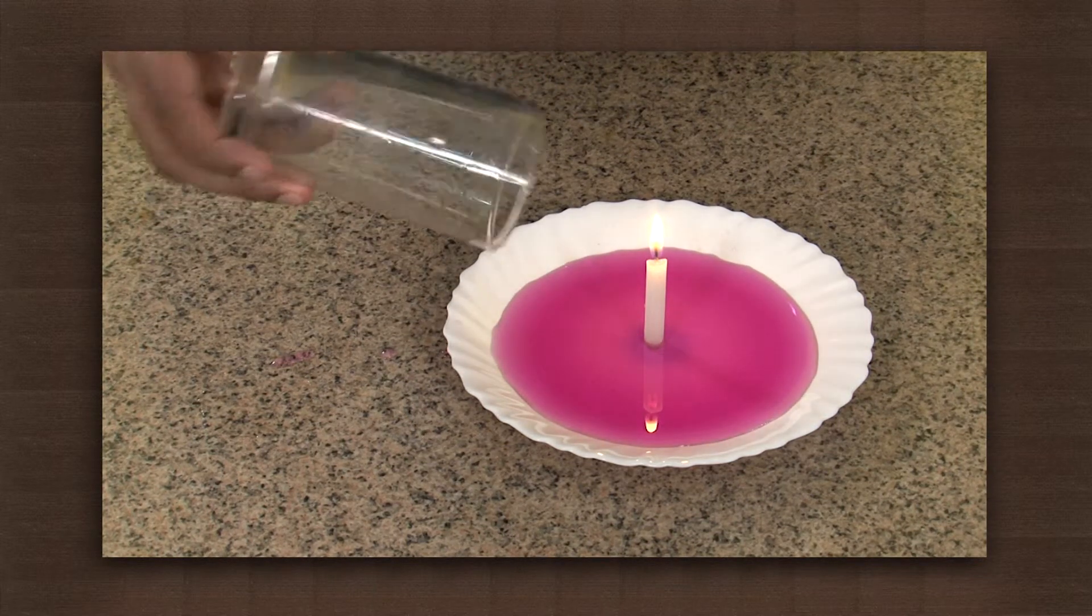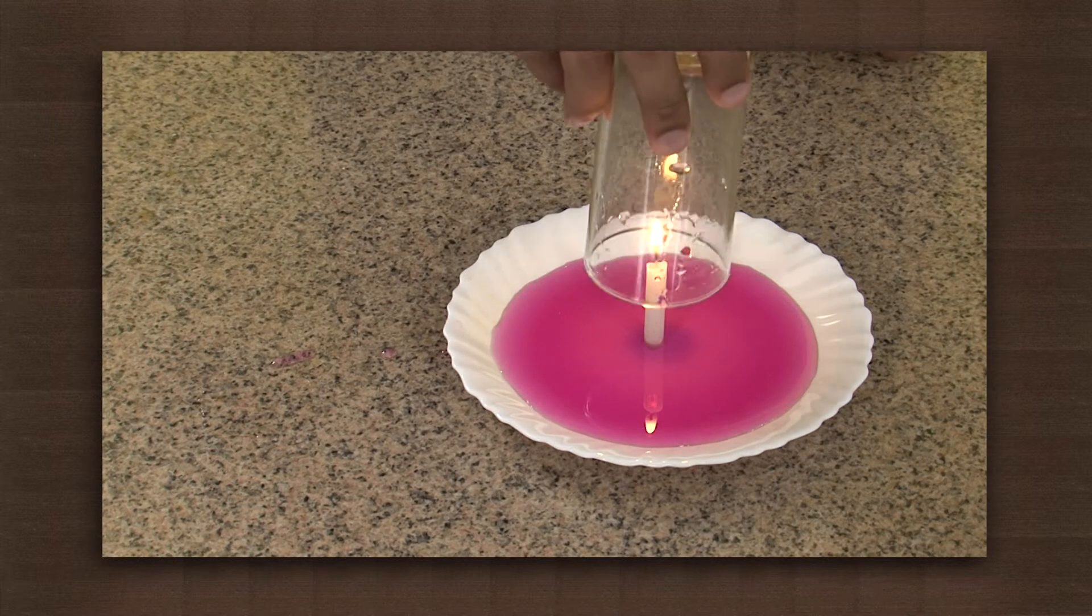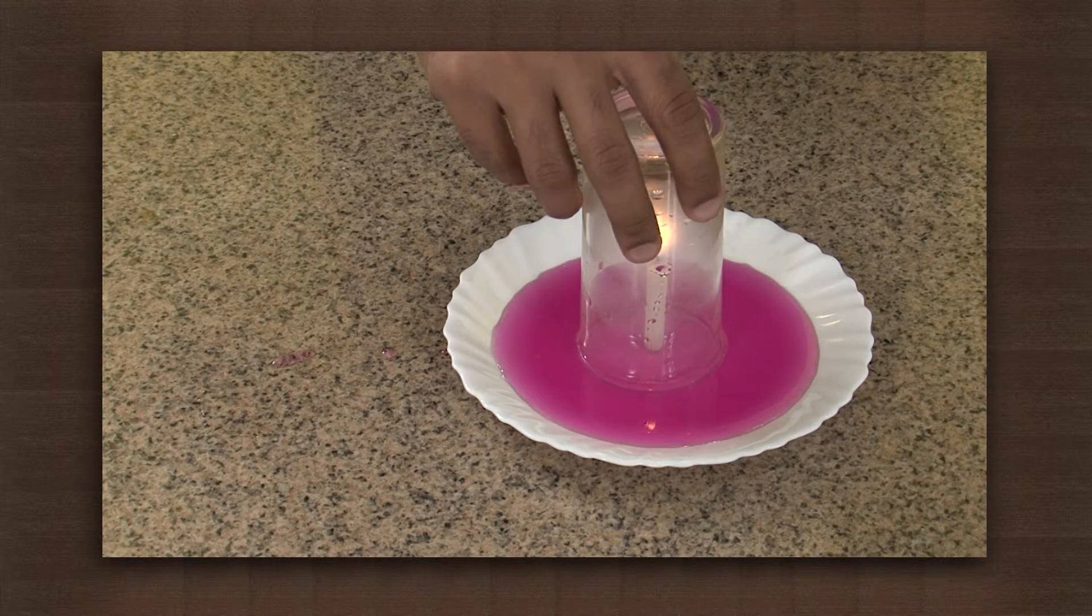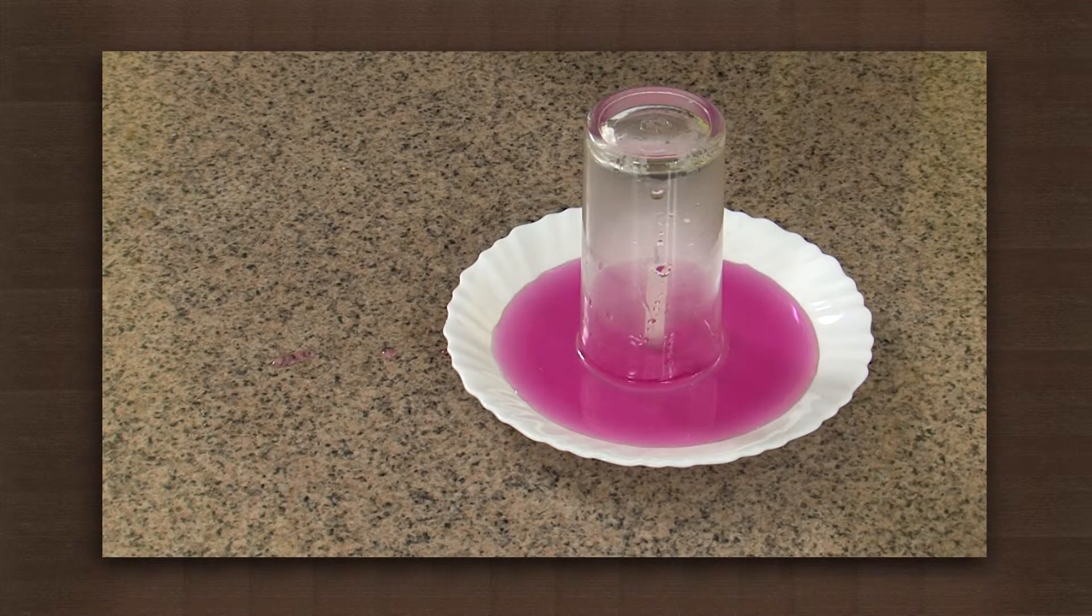Next place the glass over the flame like this. Notice that the water around the candle blocks the opening of the glass and there is no supply of air to the flame.